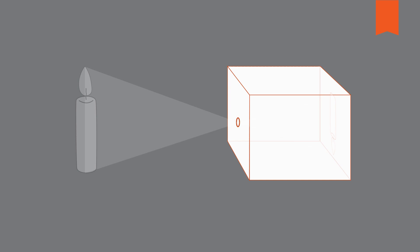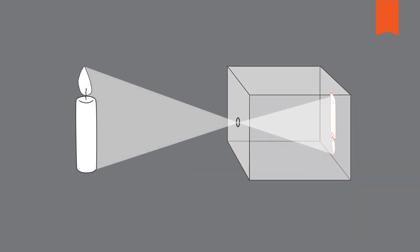So how did it all begin? The first camera was a pinhole camera known as the camera obscura. It involved nothing more than a black box with a small hole in it — no lens, no film, nothing.